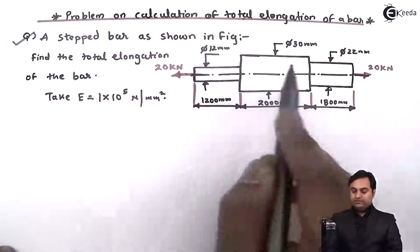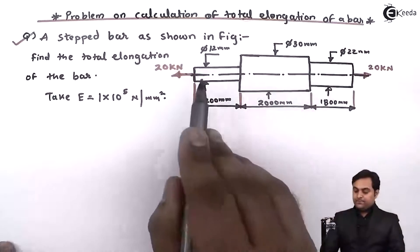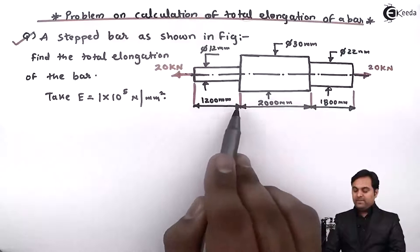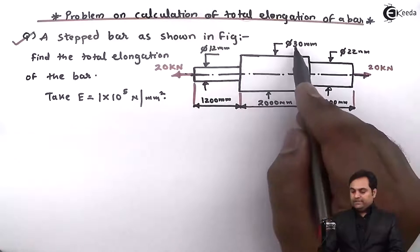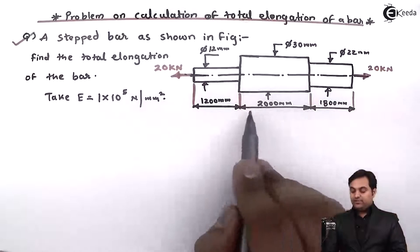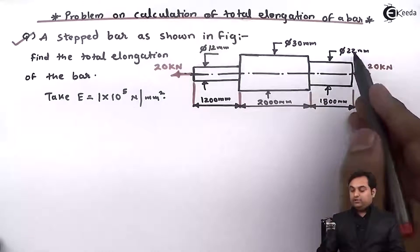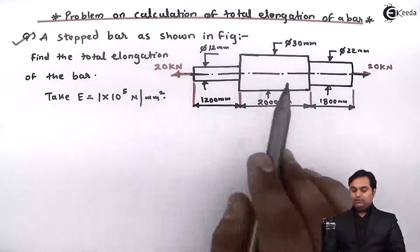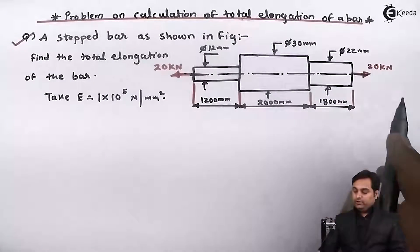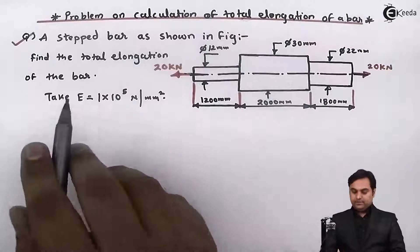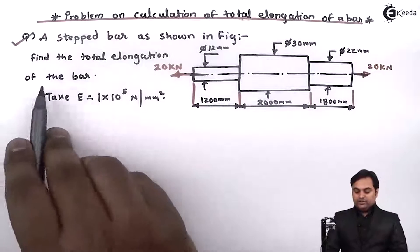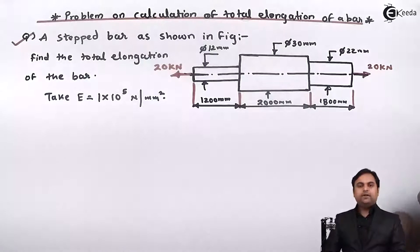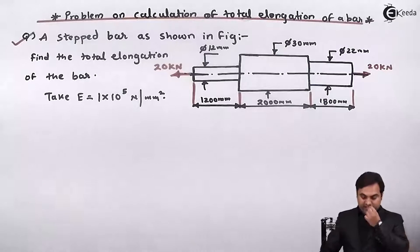A stepped bar as shown in the figure — a diagram is given. This bar has a 12 mm diameter for 1200 mm length, then 30 mm diameter for 2000 mm length, and 22 mm diameter for 1800 mm length. It is subjected to a tensile load — a pull kind of load — of 20 kN. Find the elongation of the bar. Take Young's modulus E = 1 × 10⁵ N/mm².